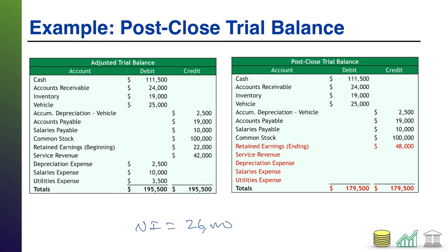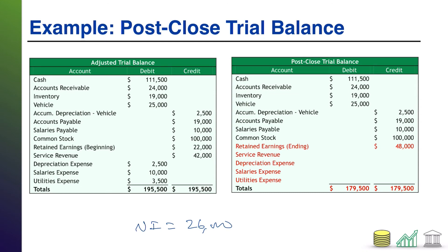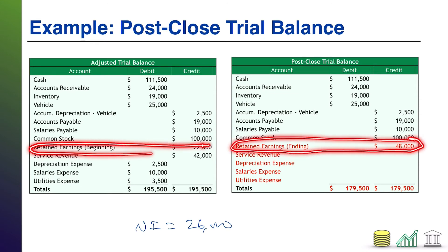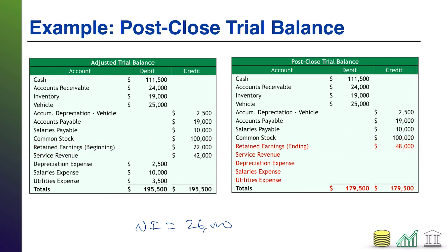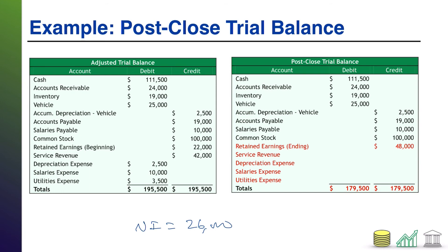Also, as part of those closing entries, that net income — the difference between your revenues and expenses — has transferred into retained earnings. Notice retained earnings has now gone from beginning retained earnings of $22,000 to an ending retained earnings of $48,000. Once we've done that, we want to retally our totals, make sure that debits and credits are still in balance. And if they are, we are done with our accounting cycle and we move on and start a new accounting period.